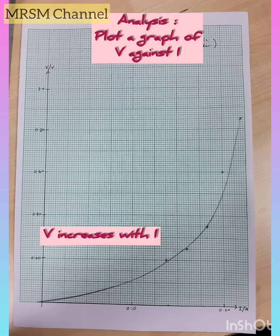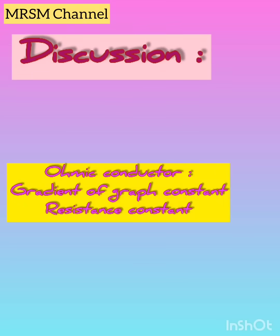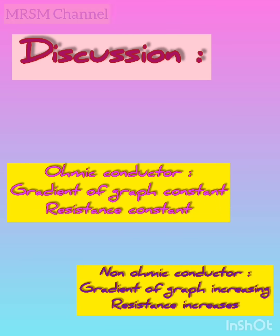And this time, the gradient is increasing means resistance increases. Constantin wire is an ohmic conductor because it obeys Ohm's law while filament bulb is non-ohmic conductor because it does not obey Ohm's law.